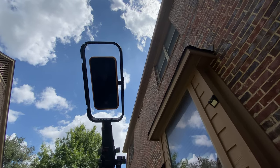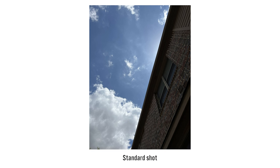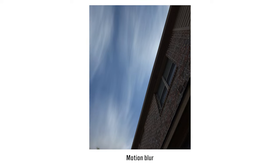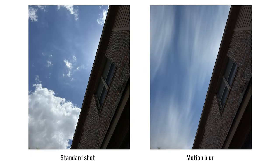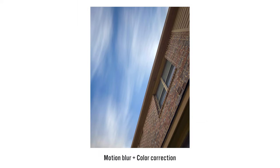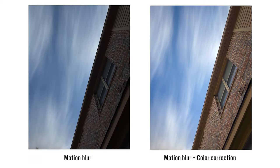Another thing that works well with motion blur is shooting clouds. I shot some moving above my house, and it's really cool how you can take a mundane-looking shot and turn it into something stylized. It looks really good once color correction is applied. I do my color correction in Photoshop, but you could use whatever photo app you prefer — I like Photoshop or Lightroom typically.